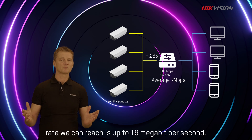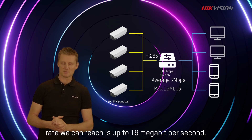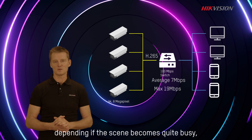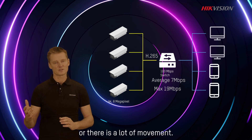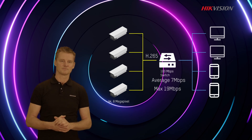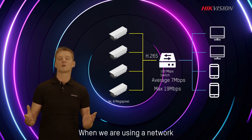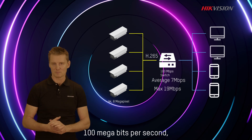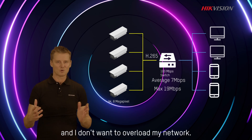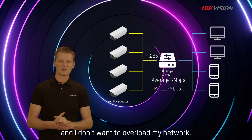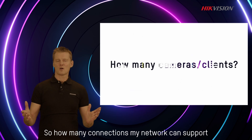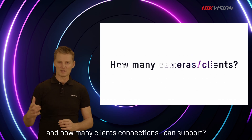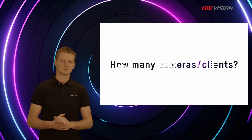The highest bitrate we can reach is up to 19 Mbps, depending on whether the scene becomes quite busy or there is a lot of movement. When using a network with a bandwidth capacity of 100 Mbps, and not wanting to overload the network, how many connections can the network support, and how many client connections can it support?